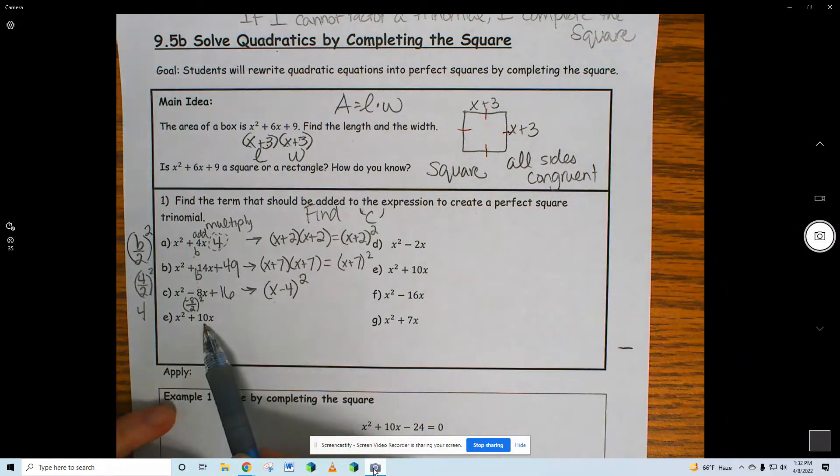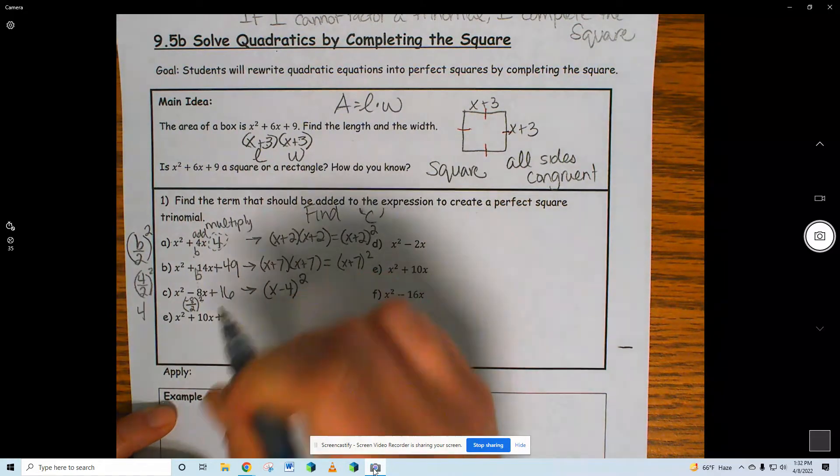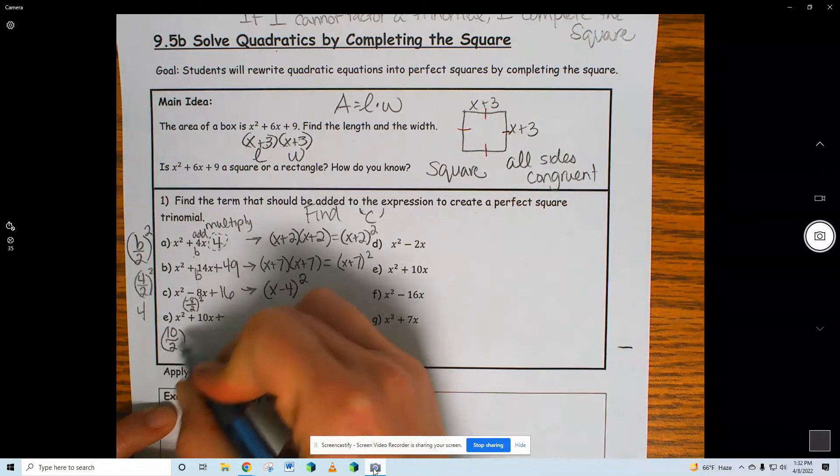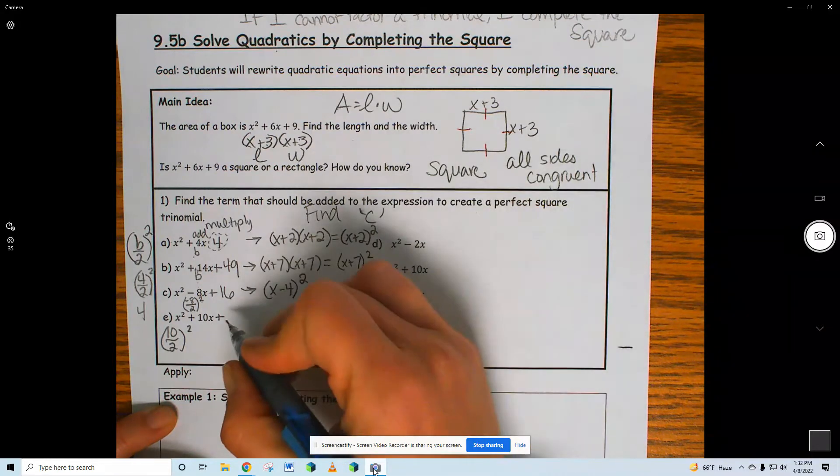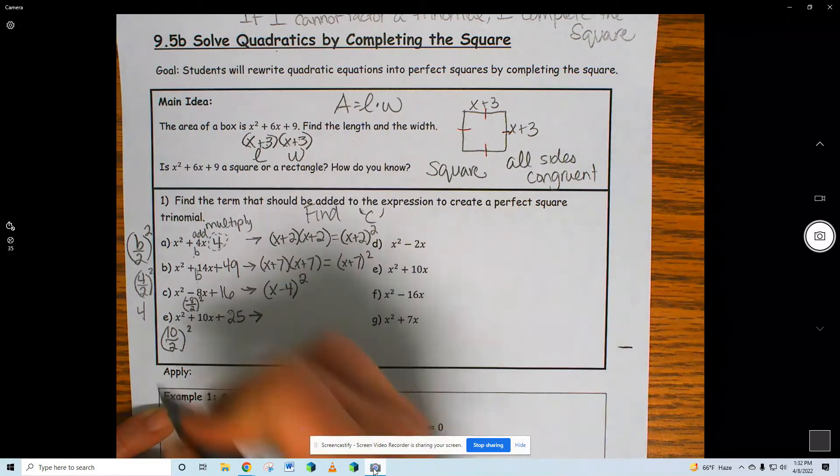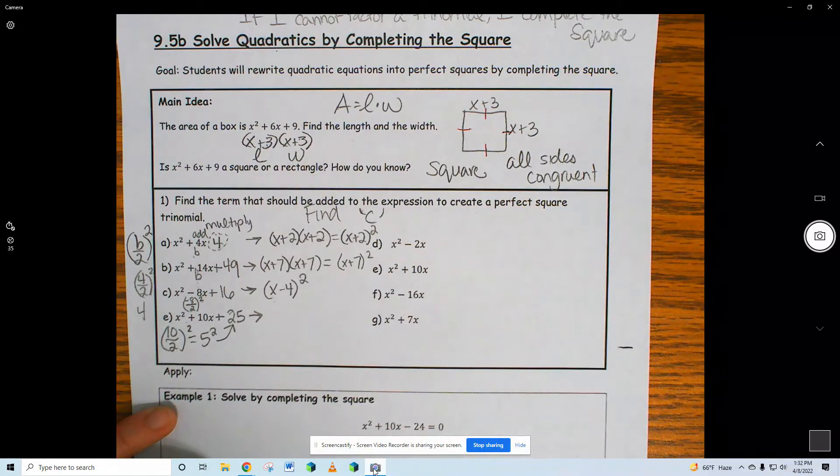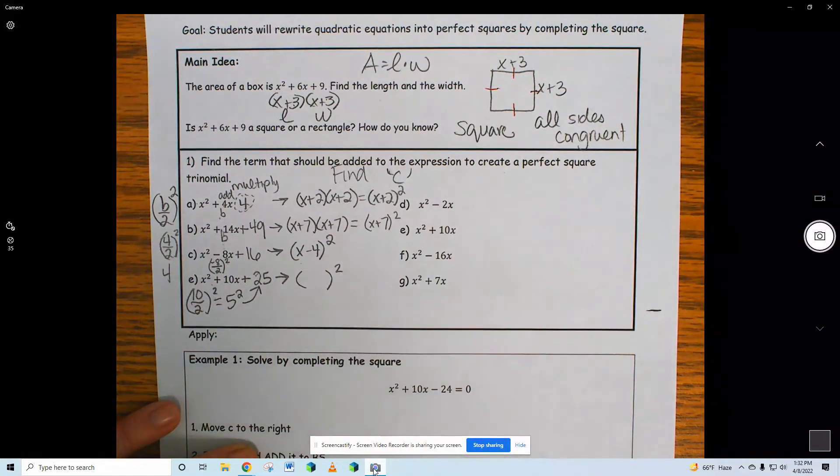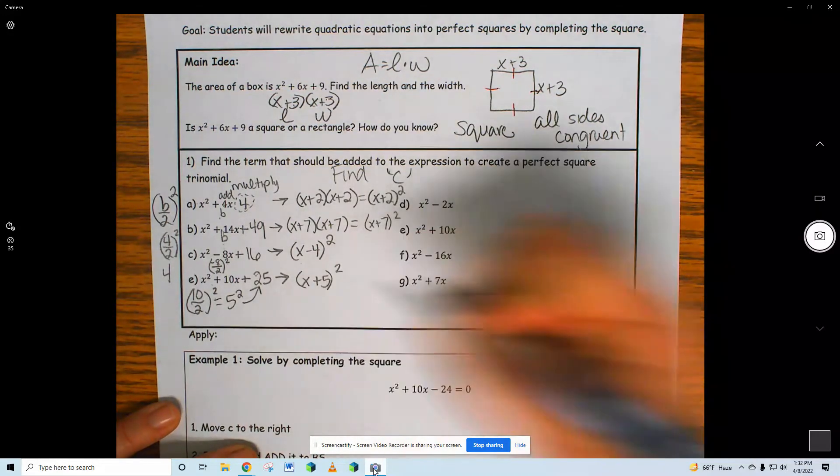D. Cut 10 in half. What two numbers make 10? 5 and 5. What's 5 times 5? So it's 10 divided by 2 squared. 25. What's the factored form of this perfect square trinomial? X plus 5 squared. Are you guys catching on to this pattern?